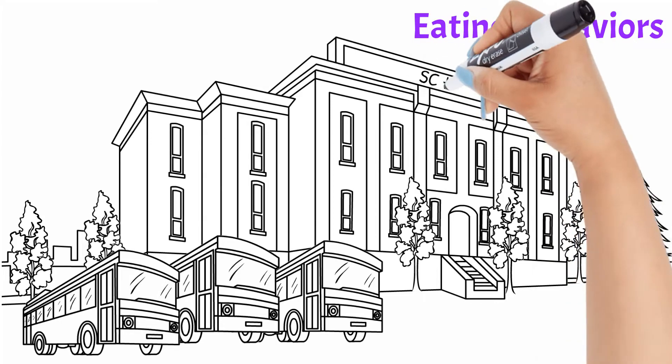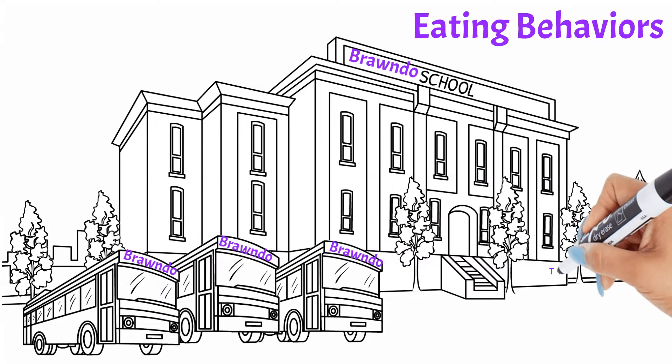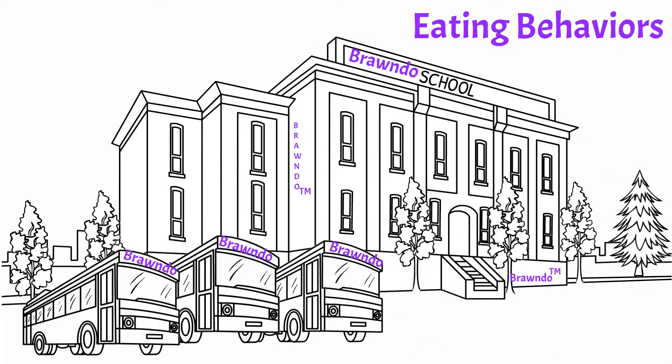These include family norms, friends' preferences, media consumed, and advertising. Even schools are susceptible to product marketing. We'll look more at this in an upcoming video.